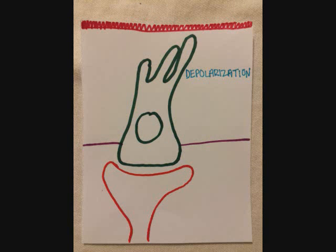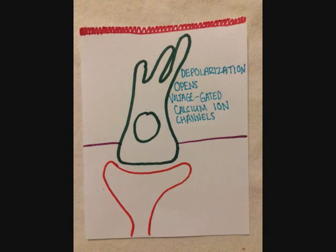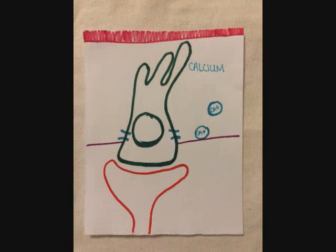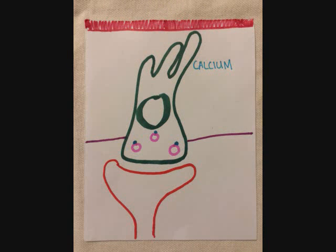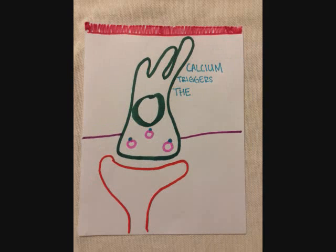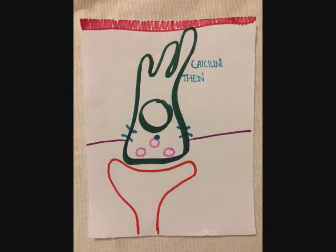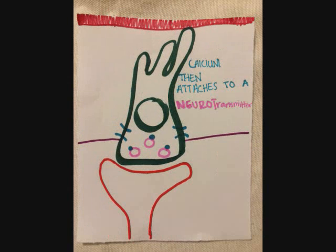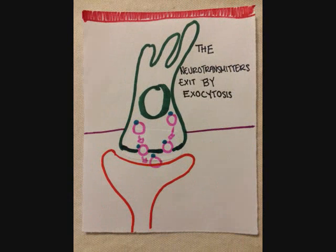Step 3: The rapid depolarization opens voltage-gated calcium ion channels. Calcium ions then begin to enter the hair cell. Step 4: The calcium ions then trigger the release of neurotransmitters within the hair cell by attaching to the neurotransmitter. Step 5: The neurotransmitters then exit by exocytosis. Exocytosis is a form of transportation by a vesicle and then taken out through an opening in the cell membrane.